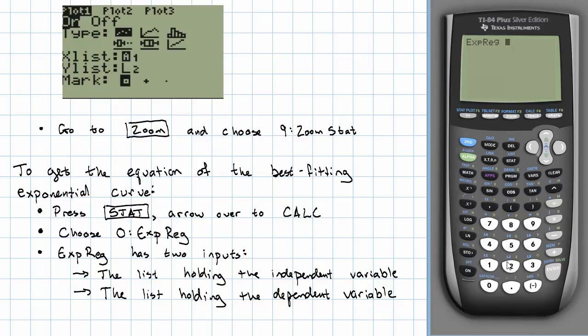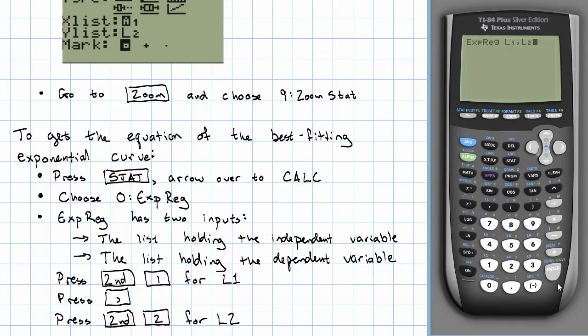You notice the list numbers in blue above the numbers one through six. So I'm going to say second one to get the first list, then press the comma, then second two to get the second list. Okay.